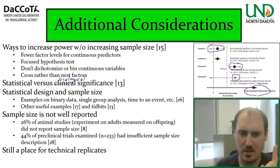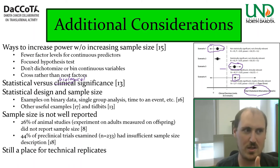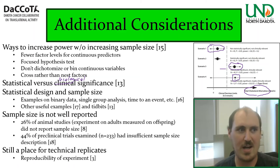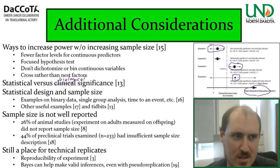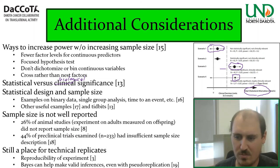Finally, there is still a place for technical replicates — they are not an unspeakable evil — as long as you are not confusing pseudo-replication with true replication. They help with reproducibility of the experiment: if there is variability in an assay or measurement, multiple technical replications can give a more robust measurement. Also, there are burgeoning ways in things like Bayesian analysis and other statistical methods to make use of even pseudo-replication, so check out the reference if you want to go in that direction.